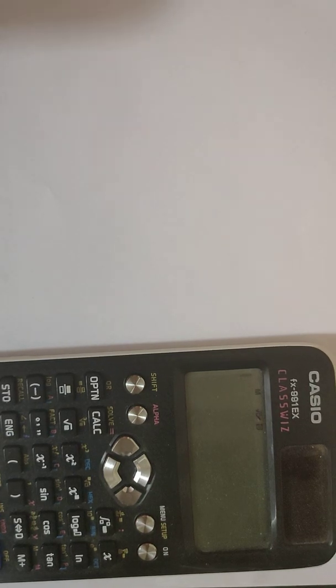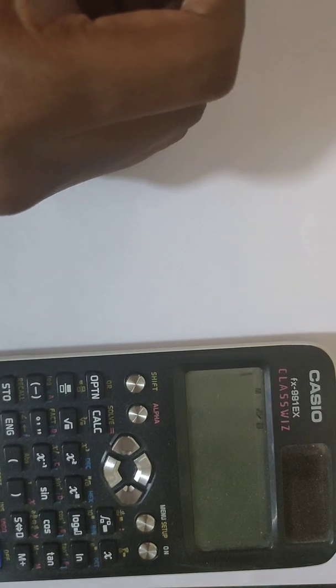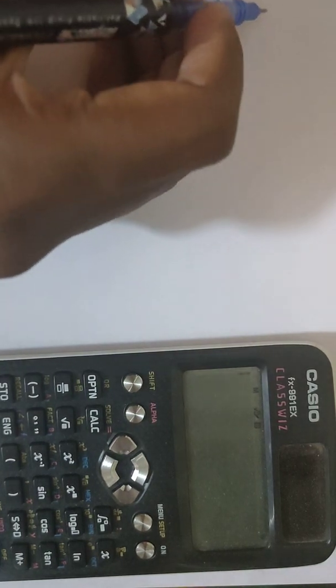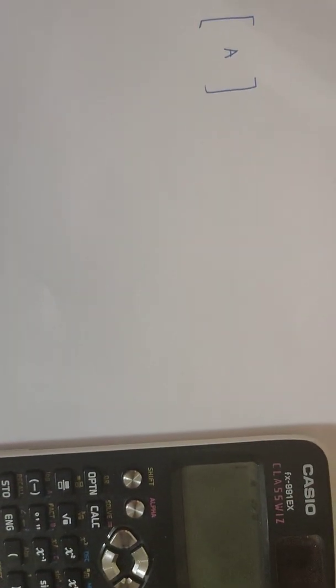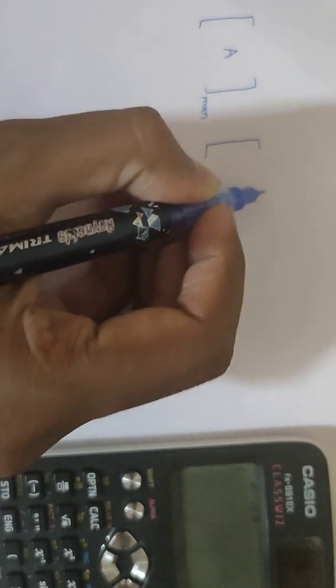Suppose you have a matrix A whose order is m by n, and suppose you have another matrix, say B, whose order is n by m, for example.